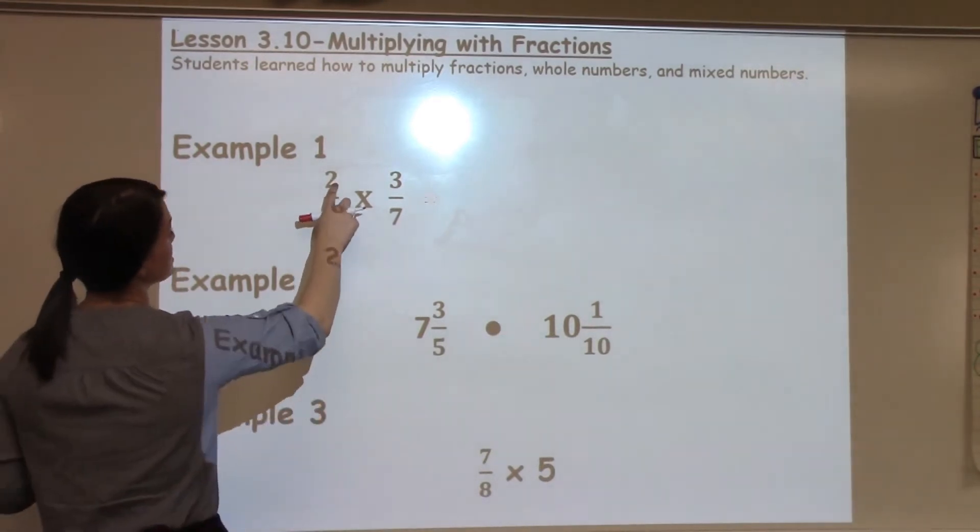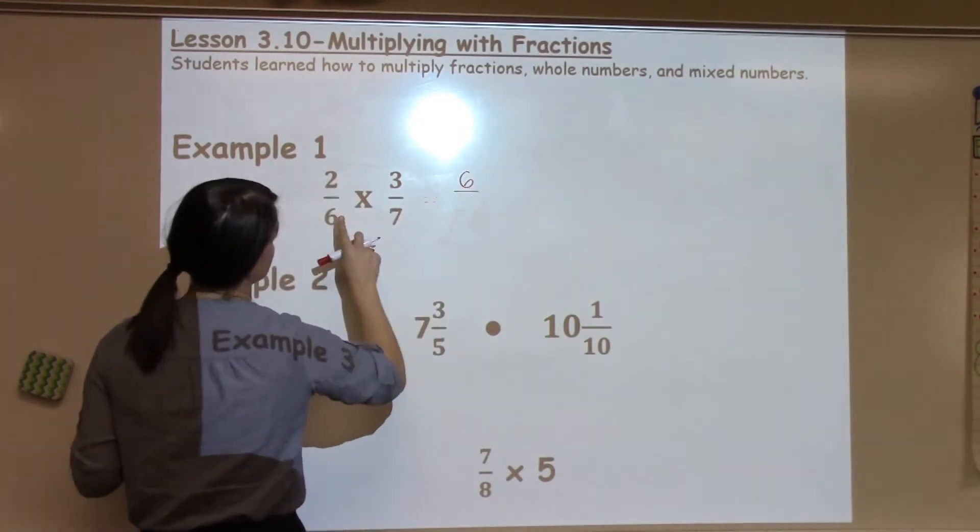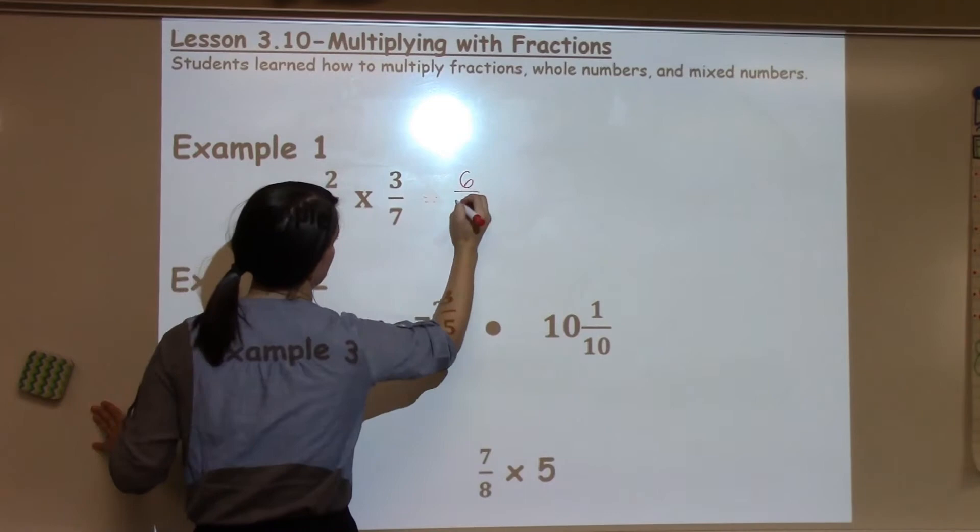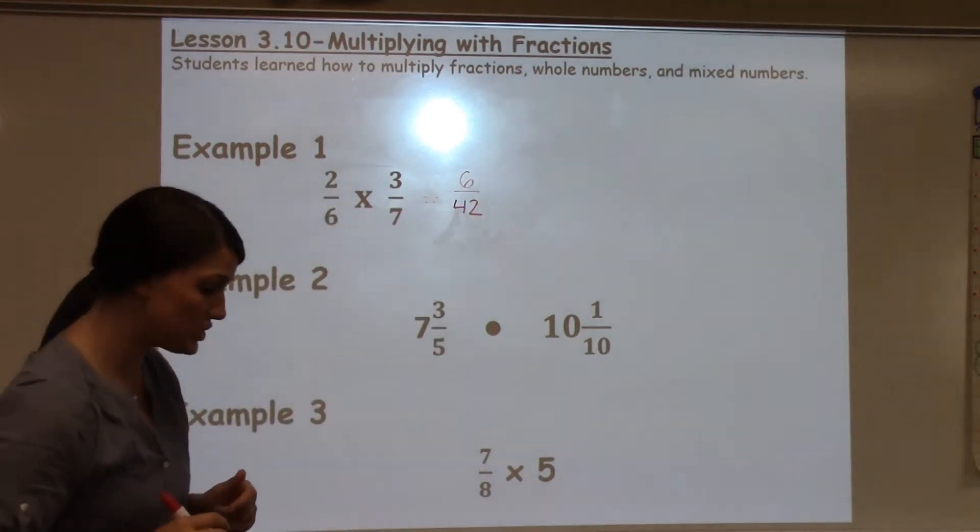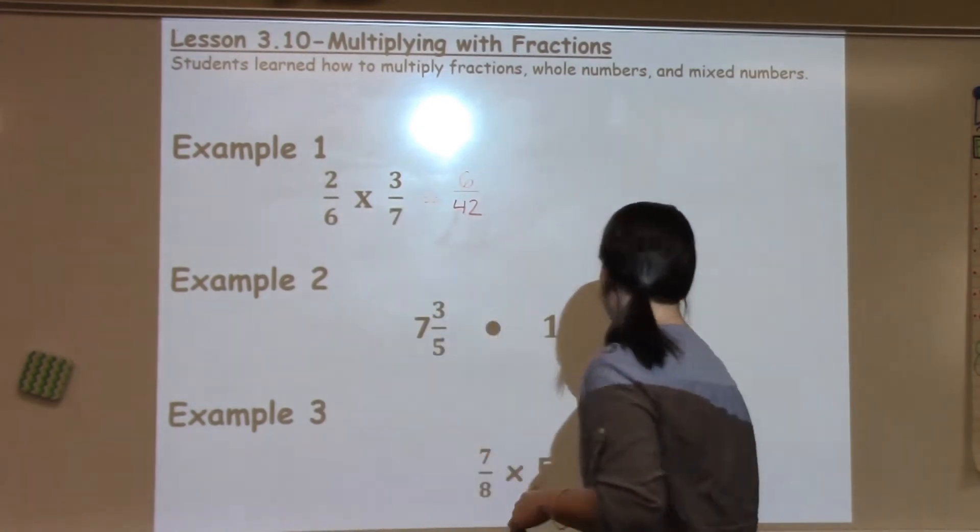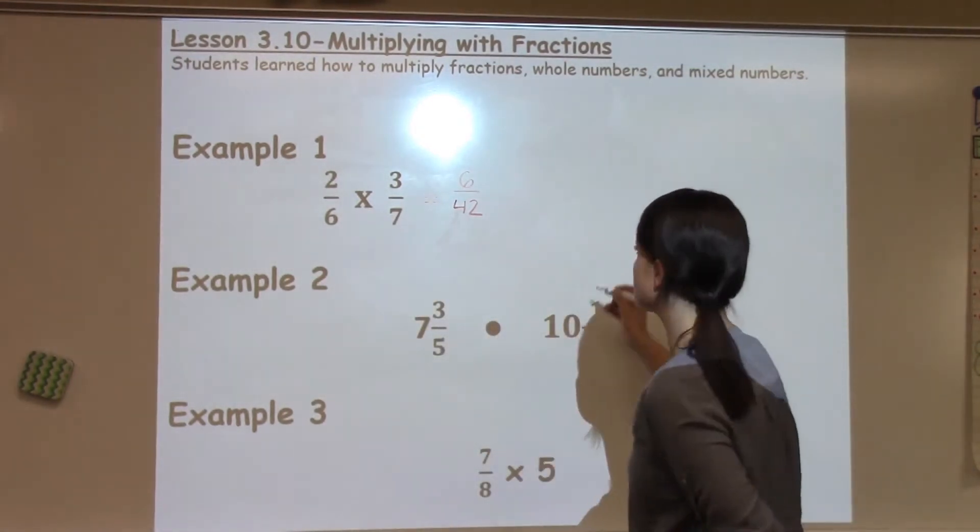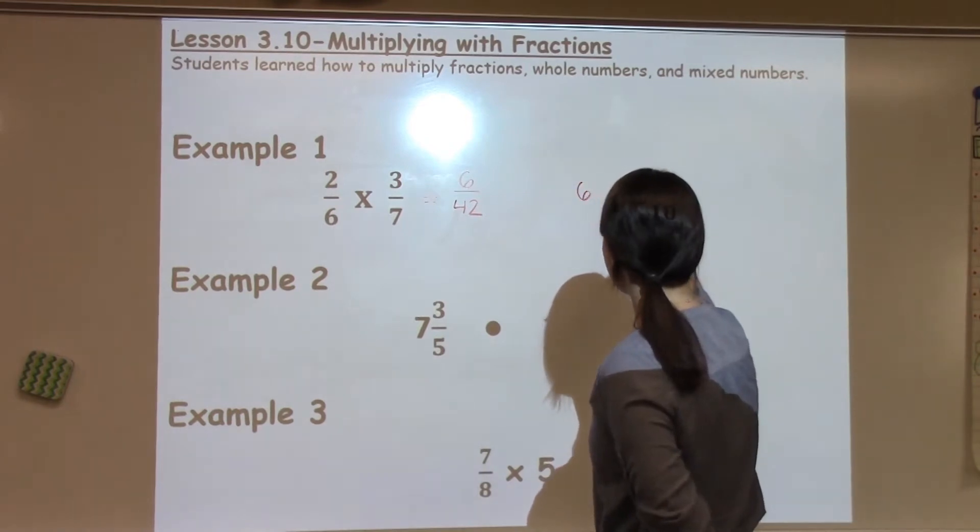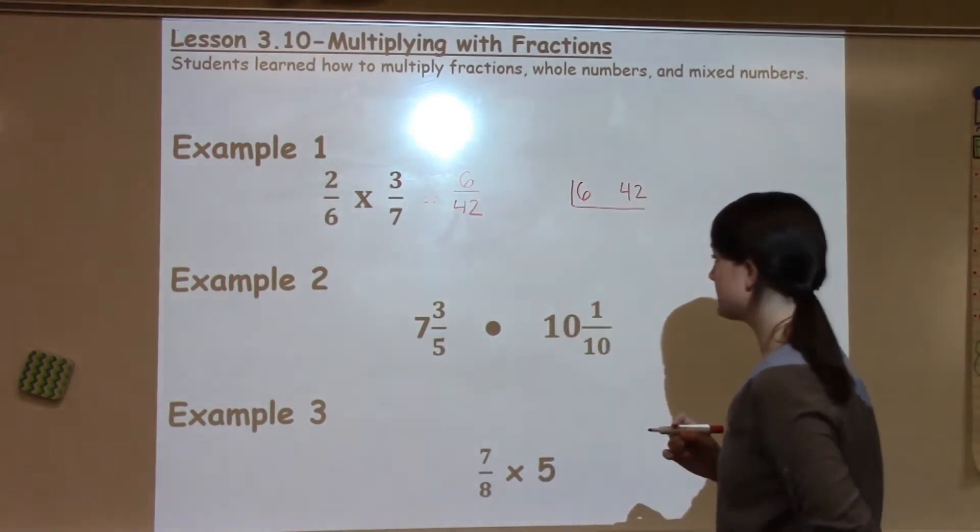So if I take 2 times 3 and multiply the tops, 6 times 7 and multiply the bottoms, I get the answer of 6 over 42, or 6/42. Now, in 6th grade, we are really focusing on simplifying those fractions, giving the best answer you can. And one strategy that we have talked about is the cake method to get there.